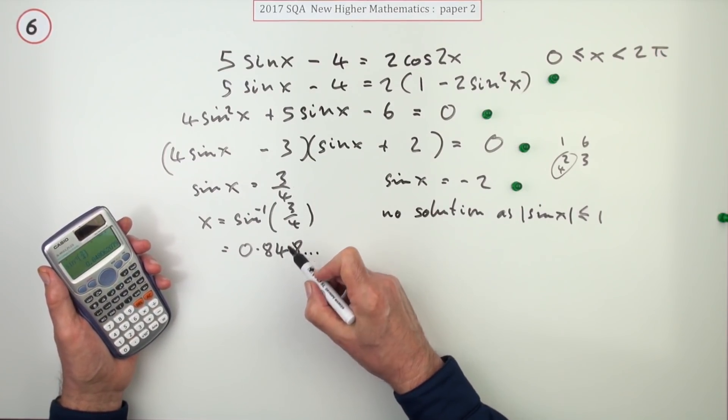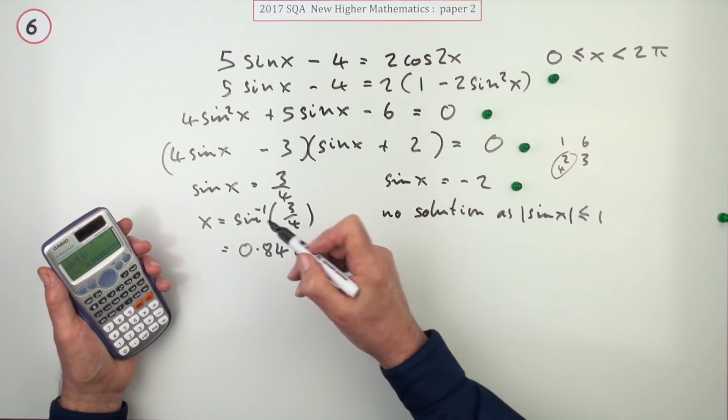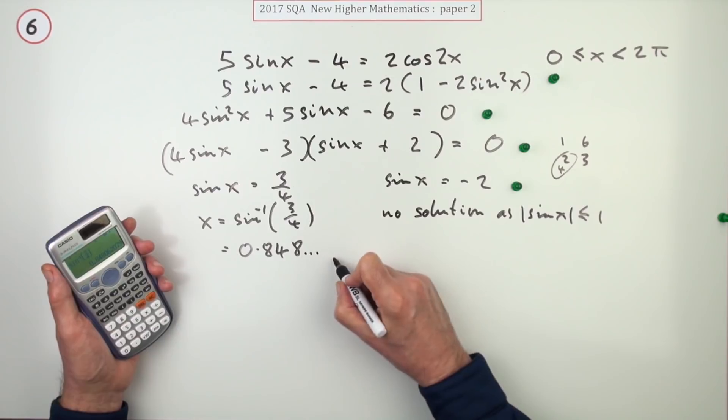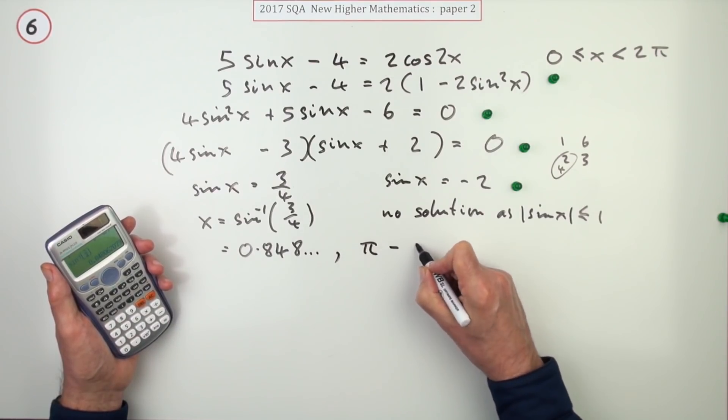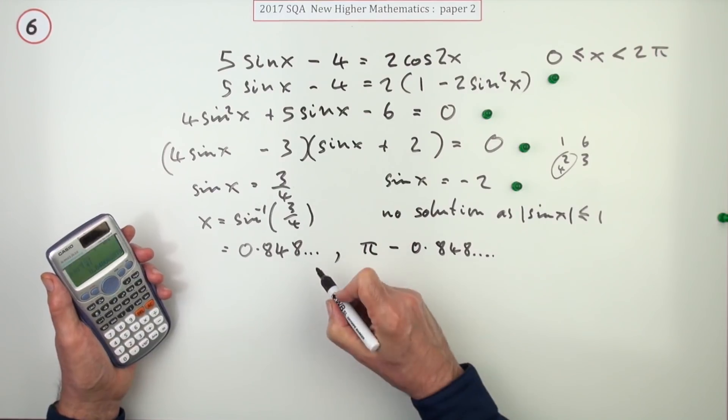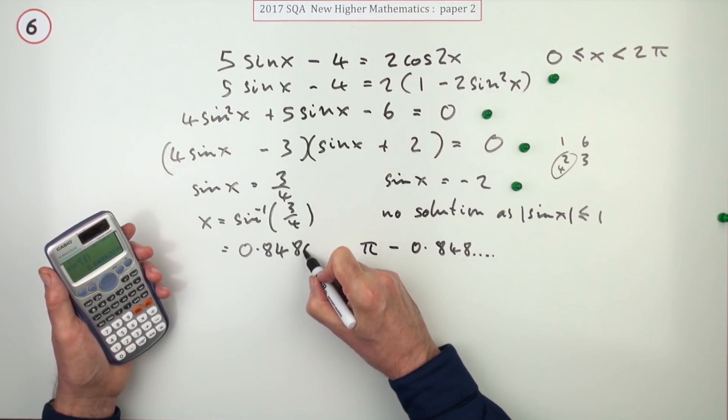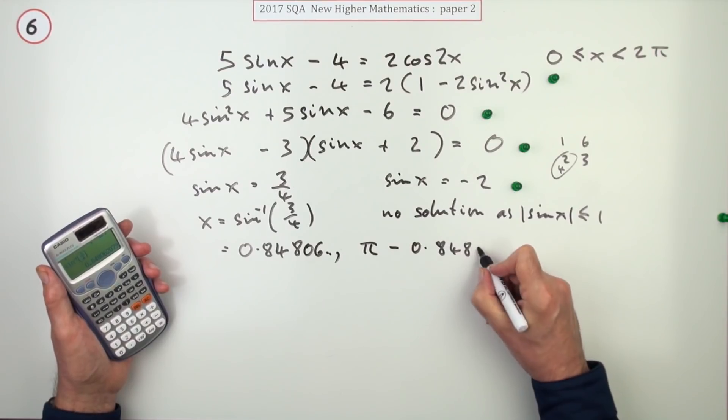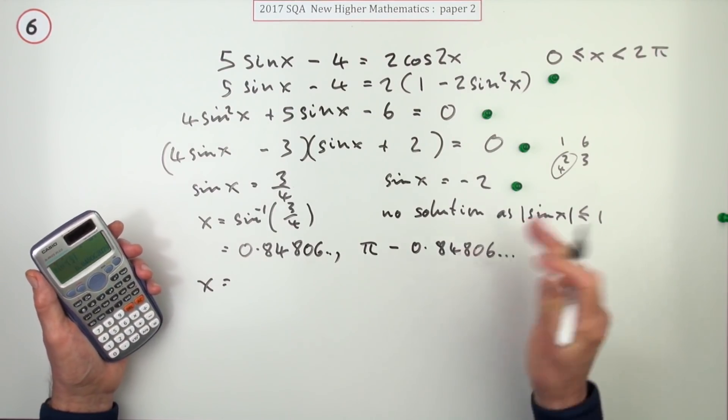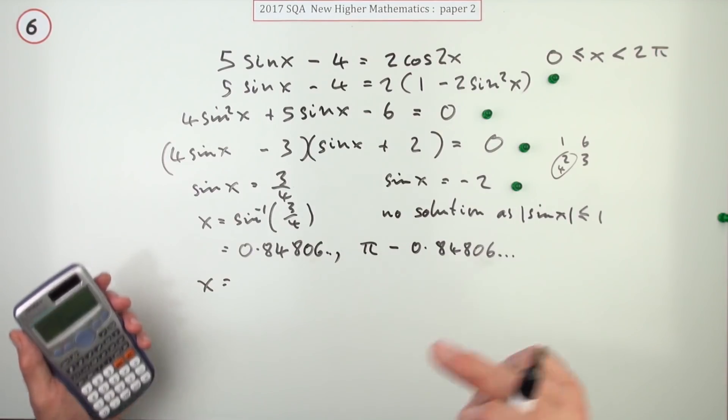The other answer will be in the second quadrant, so it'll be that away from pi. So you've got that, or pi minus 0.848 and so on. Maybe I should have put a couple more figures in there, 0.06 and so on. And these will be the only two solutions.